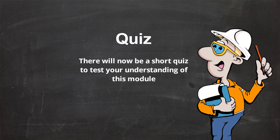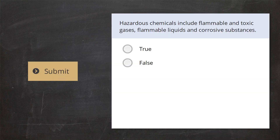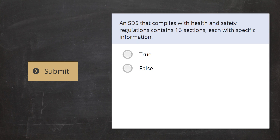There will now be a short quiz to test your understanding of this module. Hazardous chemicals include flammable and toxic gases, flammable liquids, and corrosive substances. Select true or false: An SDS that complies with health and safety regulations contains 16 sections, each with specific information.